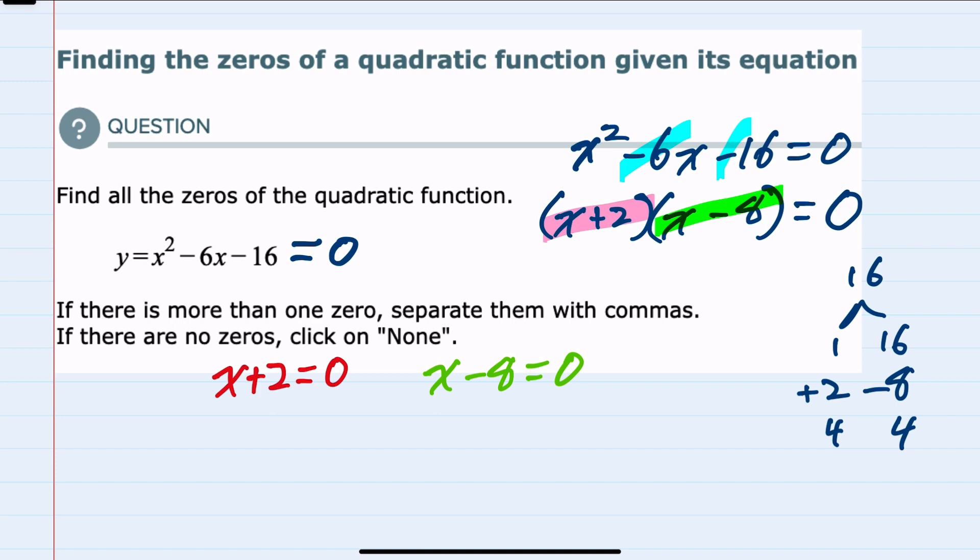From the first equation, subtracting the two over to the other side gives us x equals negative 2. That's one of the zeros. From the second equation we would add the 8 over to the other side. That would give us x equals 8 as the second zero.